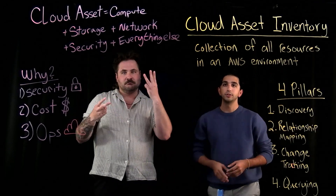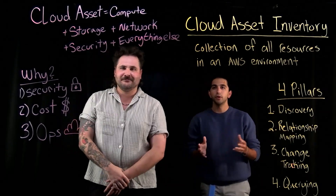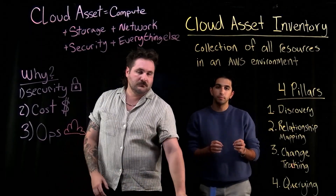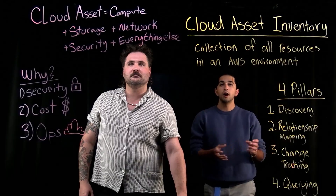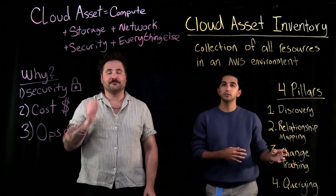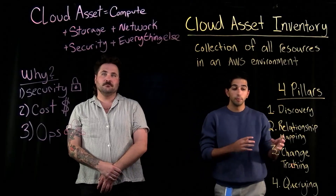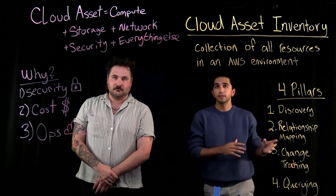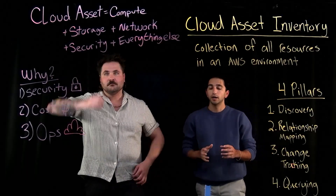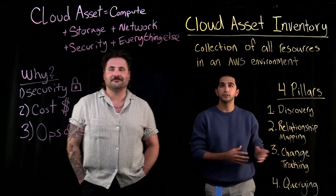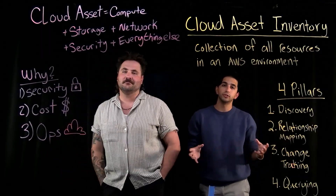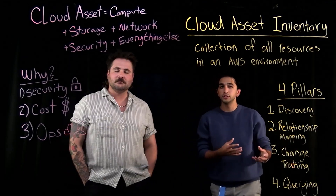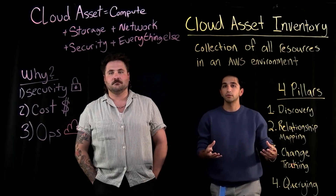That brings us to our third pillar: change tracking. When something breaks at 2am, you need to know what changed and when it happened. Your asset inventory must contain a clear audit trail of when changes are made within your AWS accounts and who made them, so you're able to remediate when needed. For the change tracking pillar, you must be able to identify different patterns — whether that's utilization patterns or access patterns. You'll always need to connect with services like Amazon CloudWatch that provide logs for your services, in order to maintain relevancy with your AWS accounts and the overall health of your environment.